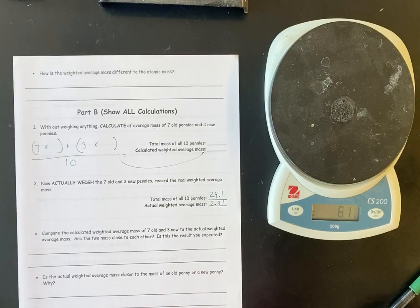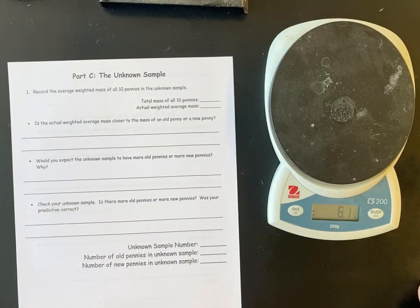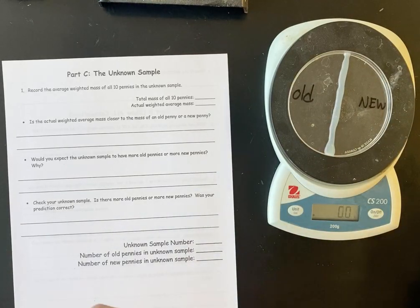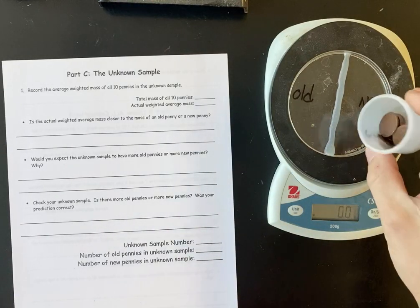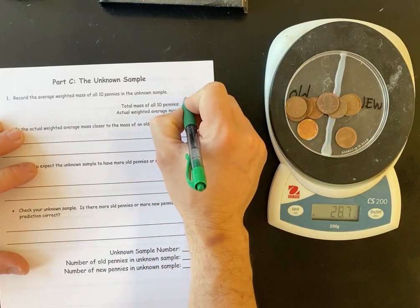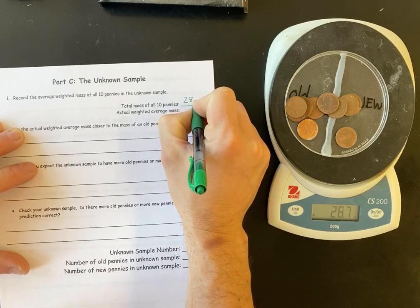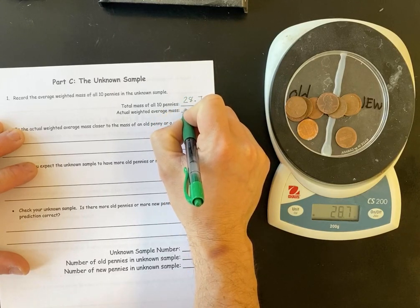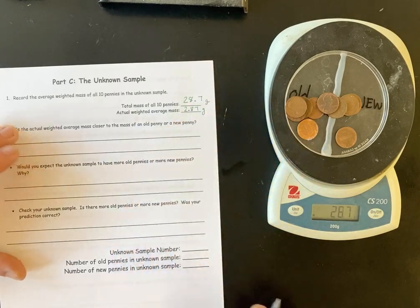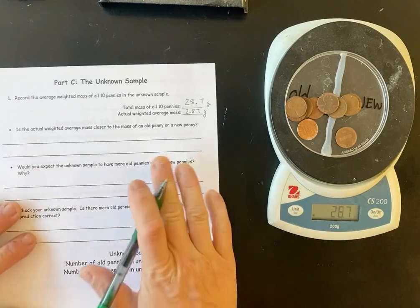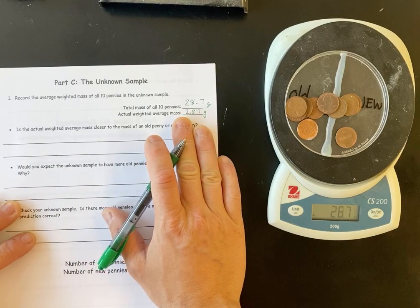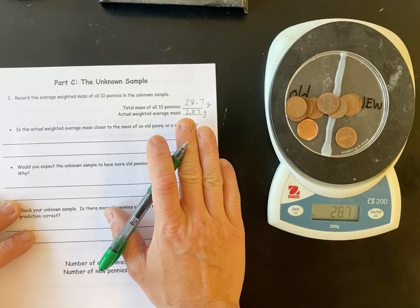And then we go to the very last part, which is the unknown sample. And so for the unknown, all we're going to do is weigh the 10 pennies because this is a mix. And so my average weight is 28.7 or my total weight is 28.7. My average is 2.87 grams when I divide by 10. And then the question is, based off the average, would you expect there to be more old or more new?